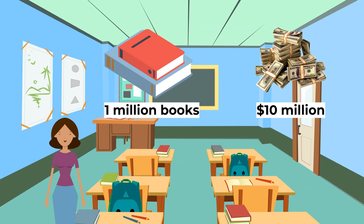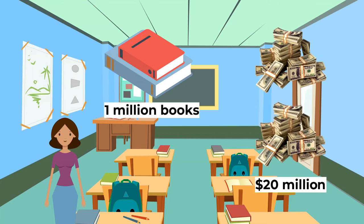Suppose an economy produces $10 million worth of goods — for example, 1 million books on economics at $10 each. At this time the money supply will be $10 million. If the government doubled the money supply, we would still have 1 million books, but people have more money. Demand for books would rise, and in response to higher demand, firms would push up prices. The most likely scenario is that if the money supply were doubled, we would have 1 million books sold at $20. The economy is now worth $20 million rather than $10 million, but the number of goods is exactly the same.